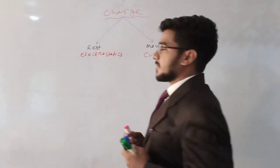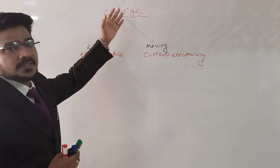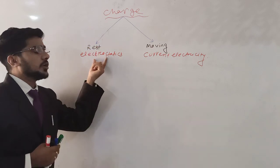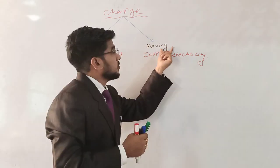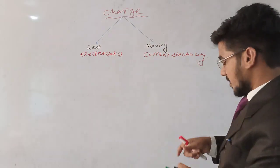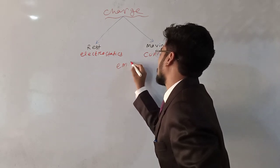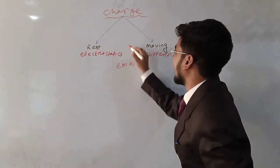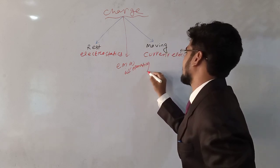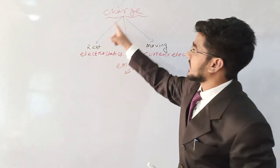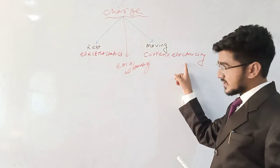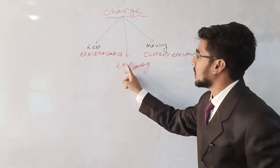If charge is at rest, we call it electrostatics. If charge is moving, we call it current electricity. If charge is accelerating, we call it electromagnetic waves. So there are three parts: when charge is at rest — electrostatics; when charge is moving — current electricity; when charge is accelerating — electromagnetic waves.